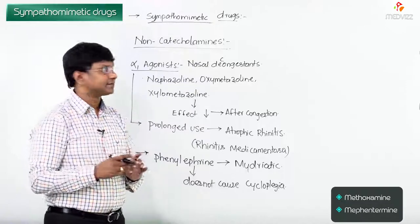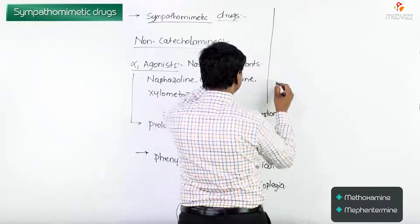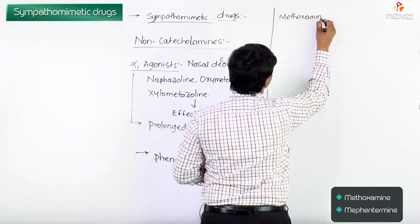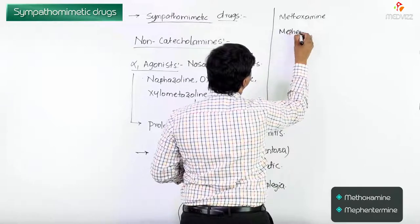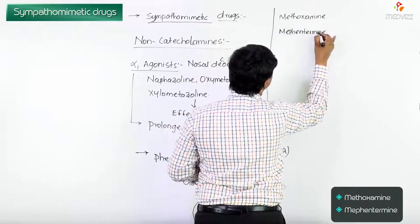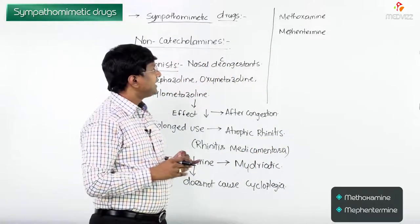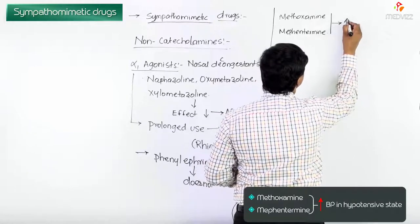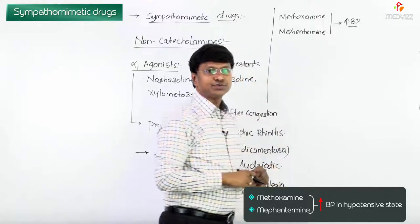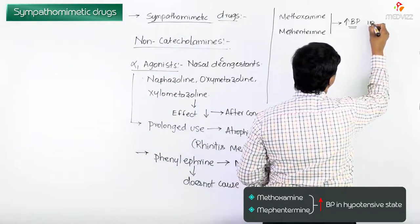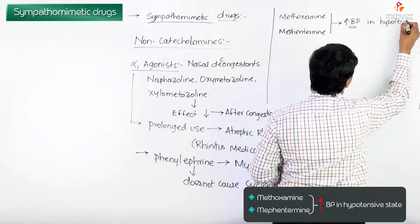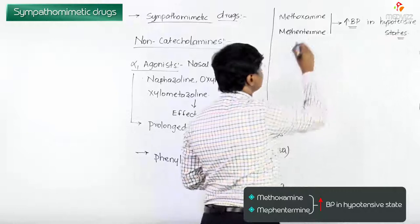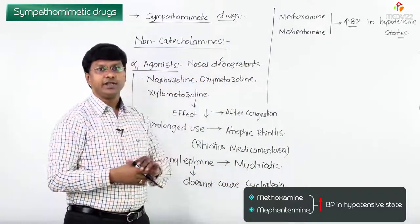We have two other non-catecholamines: methoxamine and mefentermine. Both of these drugs are used to increase the blood pressure of the individual in hypotensive states.